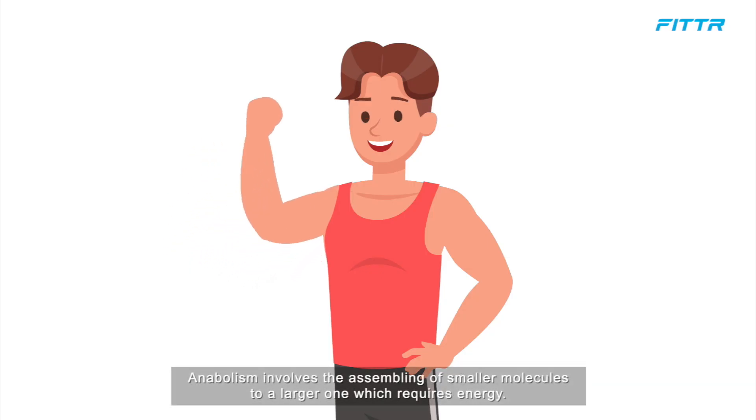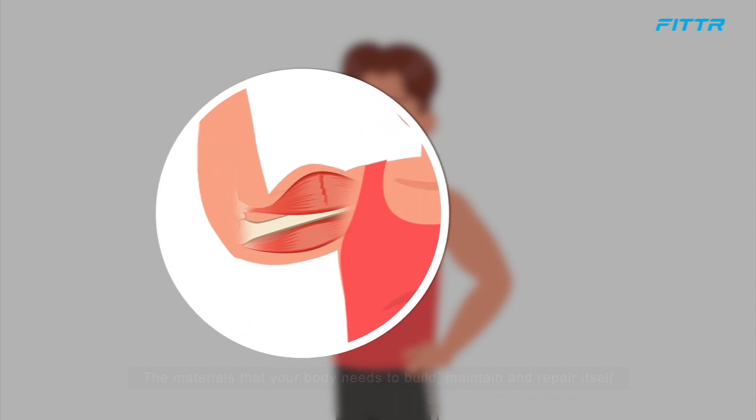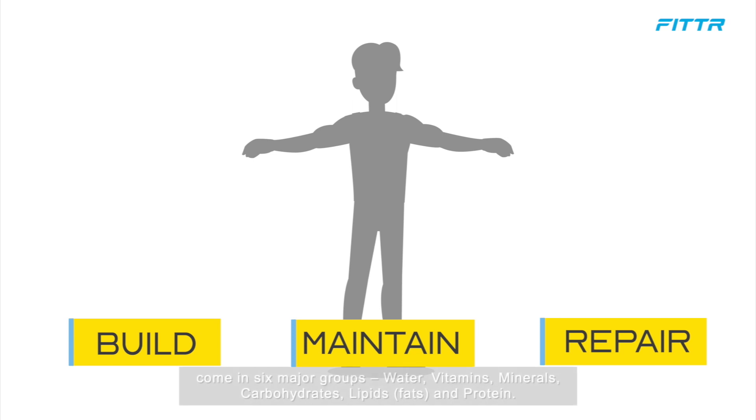Anabolism involves the assembling of smaller molecules to a larger one which requires energy. The materials that your body needs to build, maintain, and repair itself come in six major groups.